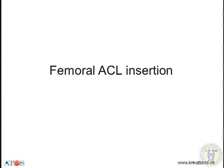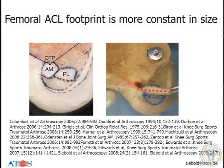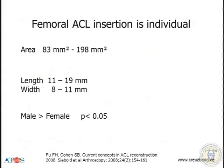On the femoral site, the insertion is more constant in shape, but there is also a difference in area. You can see the AM and PL bundle, and OTP means over-the-top position. There are a lot of studies on this. The area is a wide range — length is between 11 and 19 mm, width is 8 to 11 mm. Males also have significantly bigger knees than females.